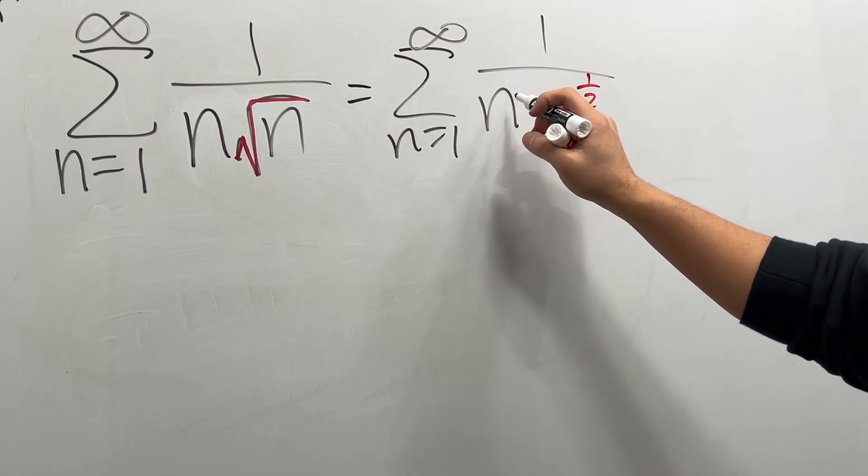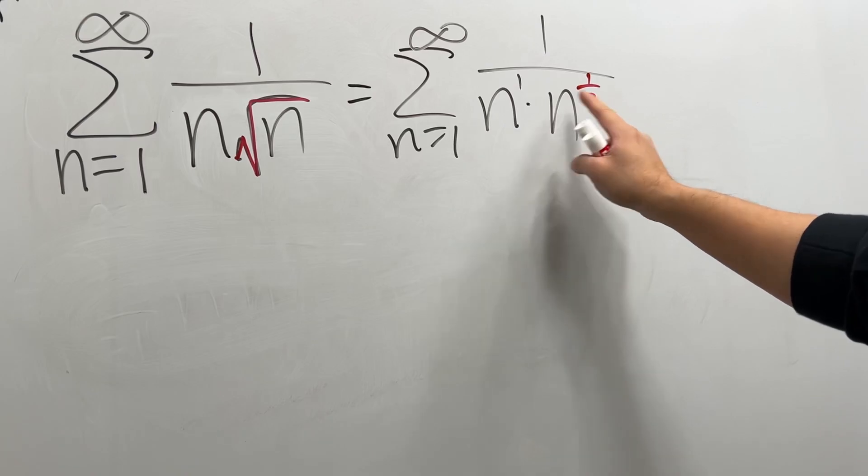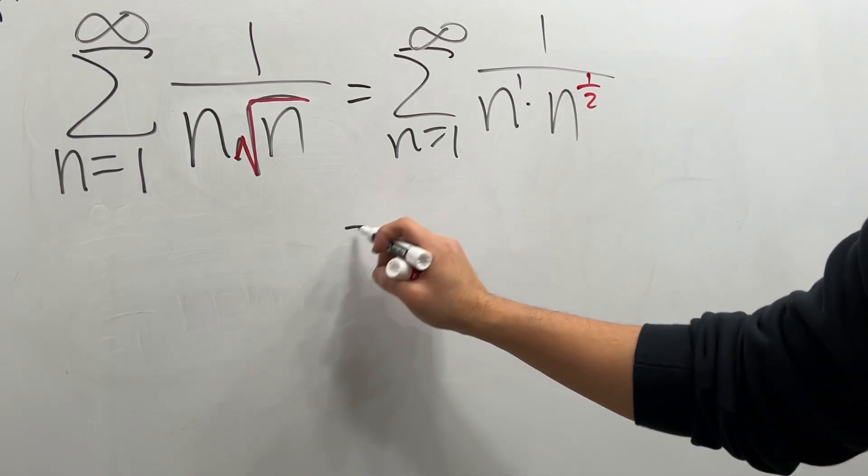Now this is really just n to the first power, and when we multiply, we add the exponent. 1 plus 1 over 2, which is 3 over 2.